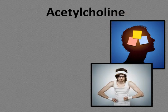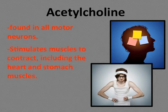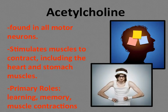Acetylcholine is a neurotransmitter found in all motor neurons and was the first neurotransmitter ever discovered. It stimulates muscles to contract, including the heart and stomach muscles, and is also involved in learning and memory. Disruptions to acetylcholine functioning — such as nerve gases or black widow spider venom — cause too much acetylcholine, resulting in severe muscle spasms and possibly death. A lack of acetylcholine, as seen in Alzheimer's disease, can produce the memory loss that patients experience.